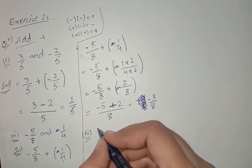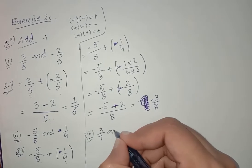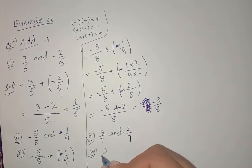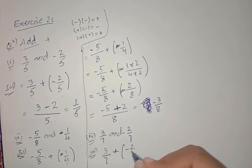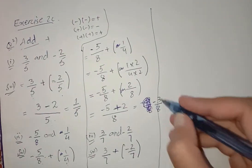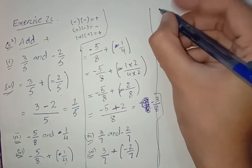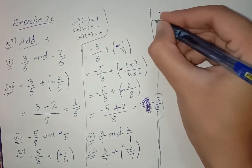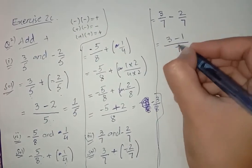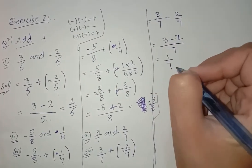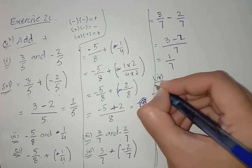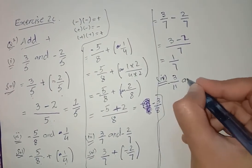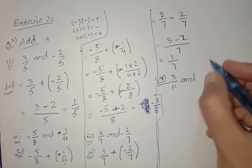Now move towards question number 3, which is 3 by 7 and minus 2 by 7. We solve this as: 3 by 7 plus minus 2 by 7. Plus minus is minus, so it becomes 3 minus 2, and the denominators are the same. The answer is 1 by 7.